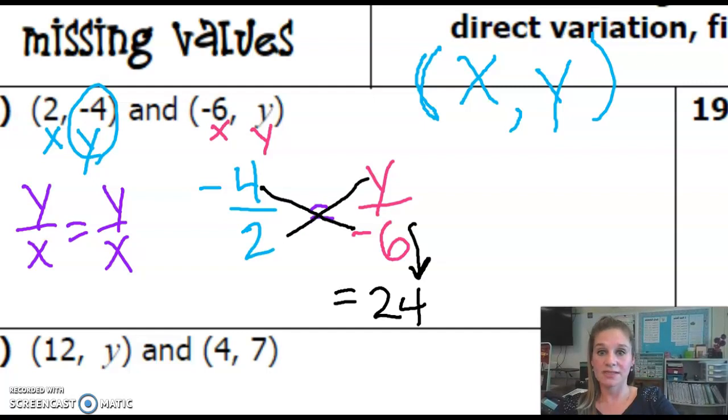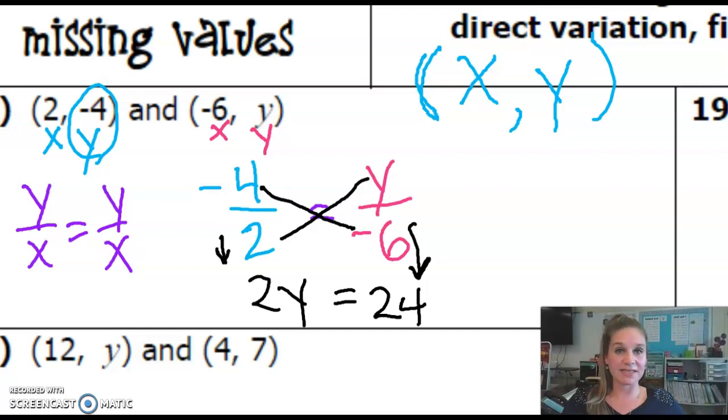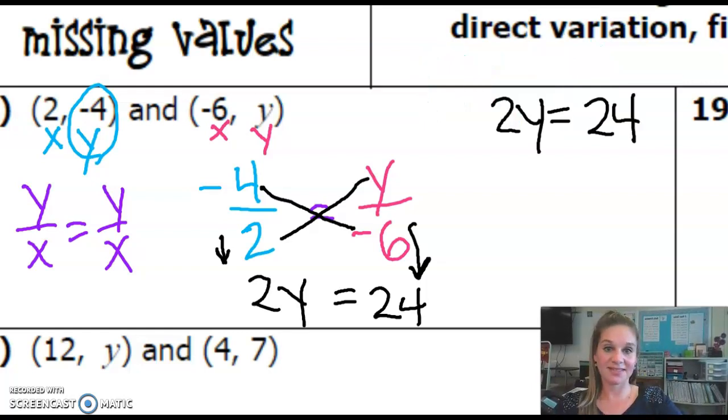And on the other side, I'm going to multiply 2 times Y, which is simply 2Y. So I have a very simple equation, a one-step equation of 2Y is equal to 24. And since I'm running out of room, I'm going to bring this up here.